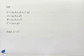A equals the set {A, B, C, D}. B equals the set {C, D, E, F}. C equals the set {A, E, G}.